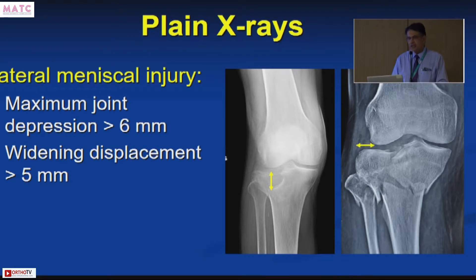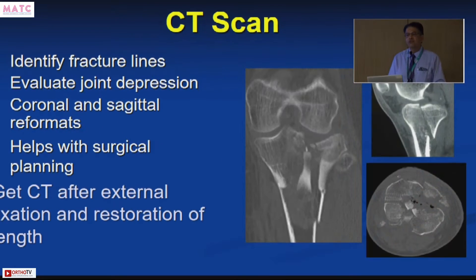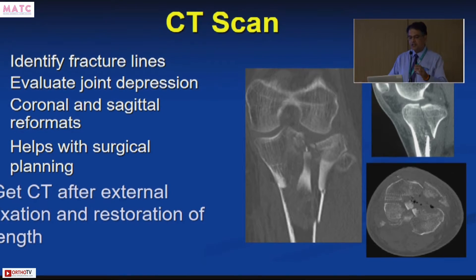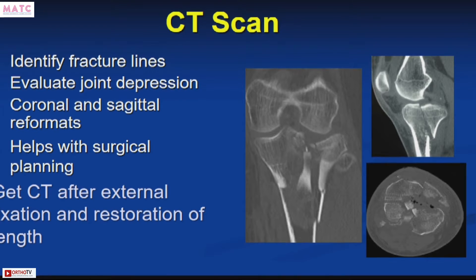The game changer was when we started using CT scan more often in radiological assessment of proximal tibial fractures. With 2D and 3D reconstructions you can identify all the fracture lines, assess exactly which part of the articular surface is depressed and the extent of that depression — both of which help with surgical planning.